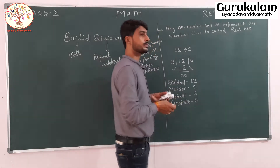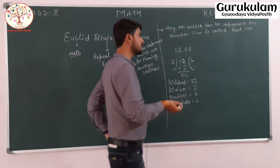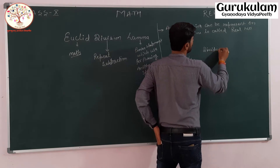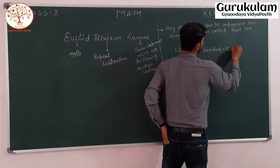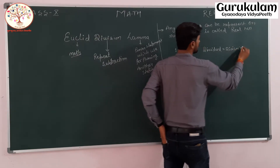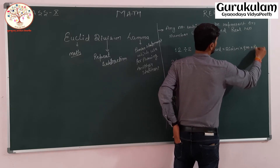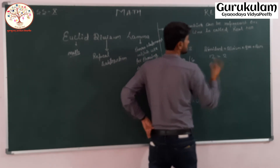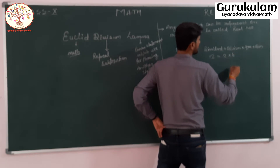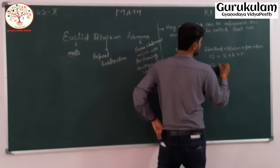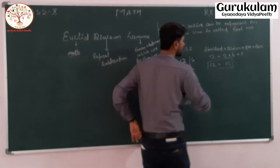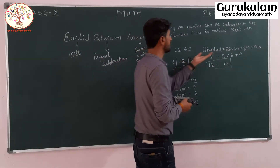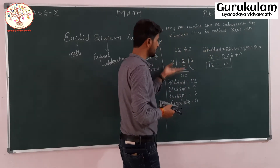To check whether you have done a correct division or not, there is a formula: dividend equals divisor into quotient plus remainder. Let us check: 12 equals 2 times 6 plus 0, which gives 12 — so we have done a correct division. This is the method of checking division.